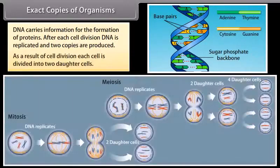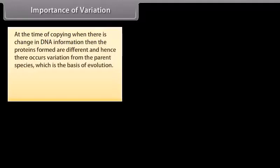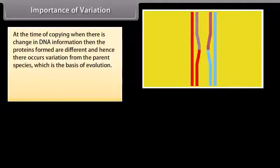As a result of cell division, each cell is divided into two daughter cells. At the time of copying, when there is a change in DNA information, the proteins formed are different, and hence there occurs variation from the parent species, which is the basis of evolution.